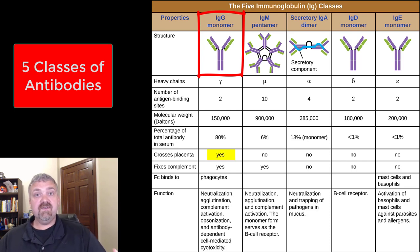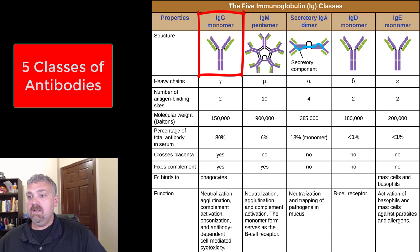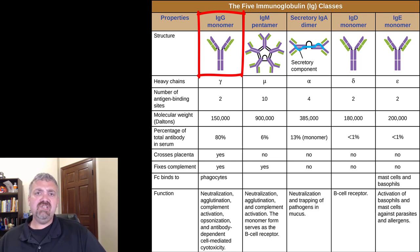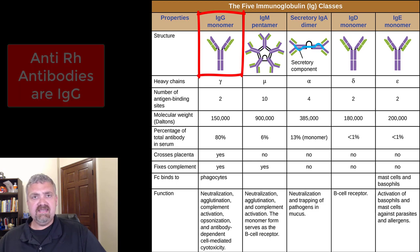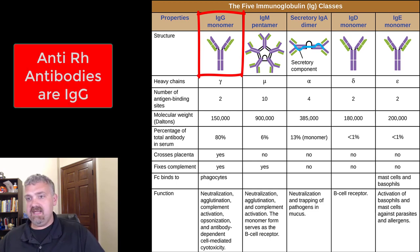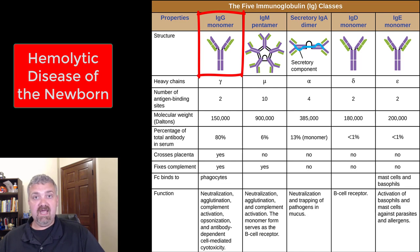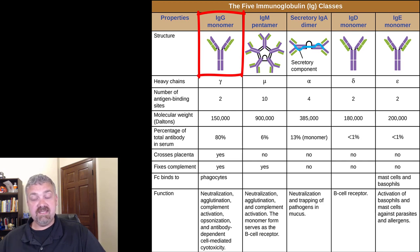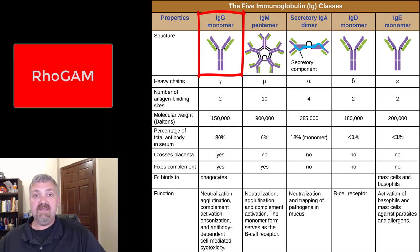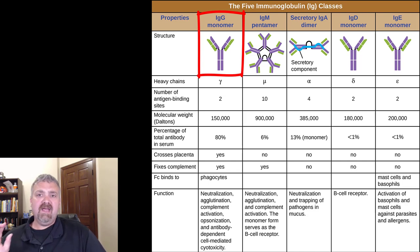Another unique thing about IgG: these are the only ones that cross the placenta. All five classes of antibodies cross into breast milk, but only IgG antibodies cross the placenta. An example of IgGs which can cause problems would be the anti-RH antibodies. Your anti-RH antibodies can cross the placenta — that's what leads to hemolytic disease of the newborn. If you have an RH negative mom and an RH positive baby, after the first pregnancy sensitization, mom would have anti-RH antibodies that could cross the placenta. That's what ROGAM is going to desensitize.